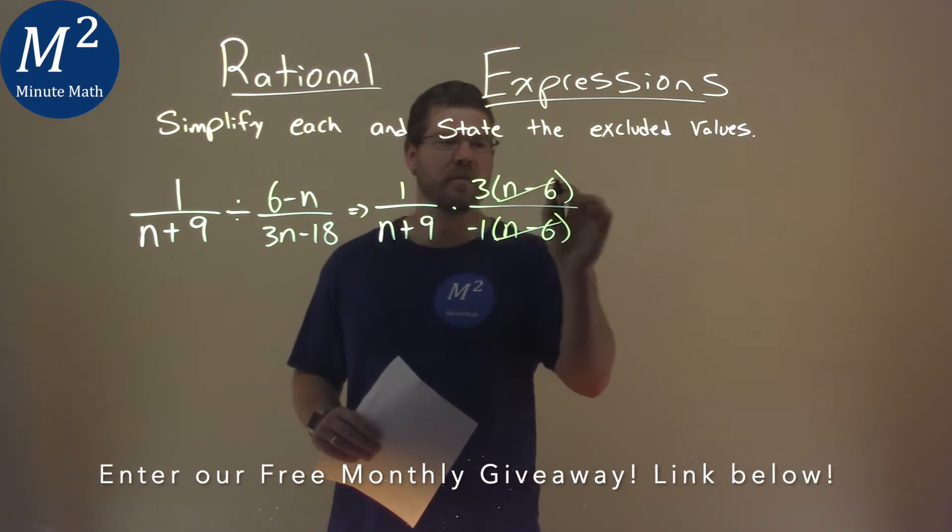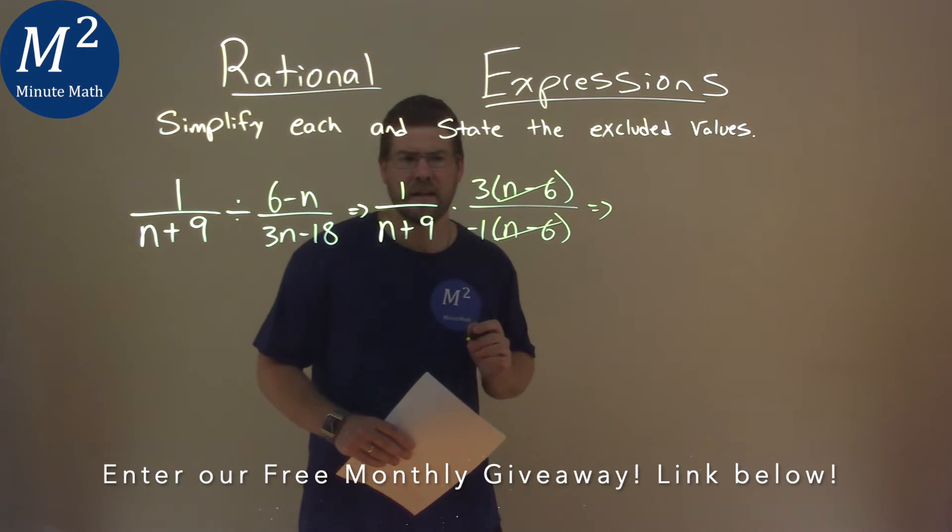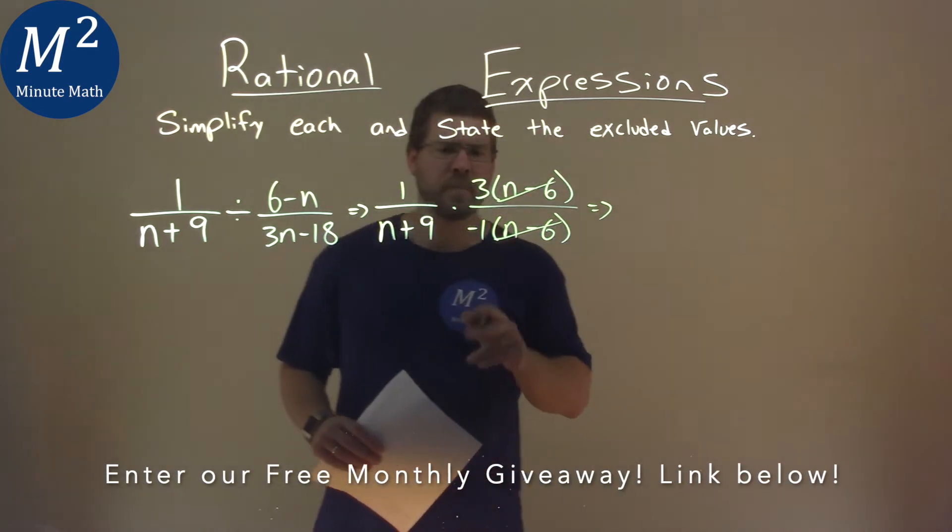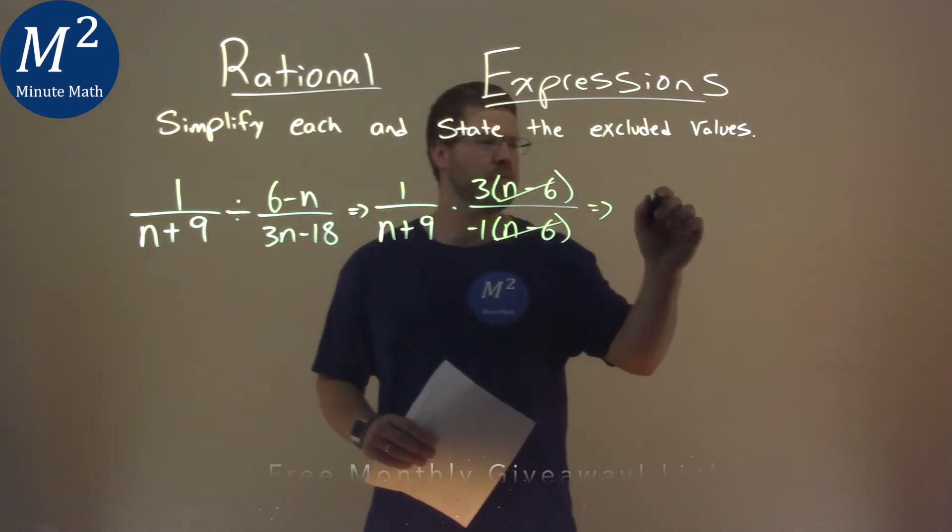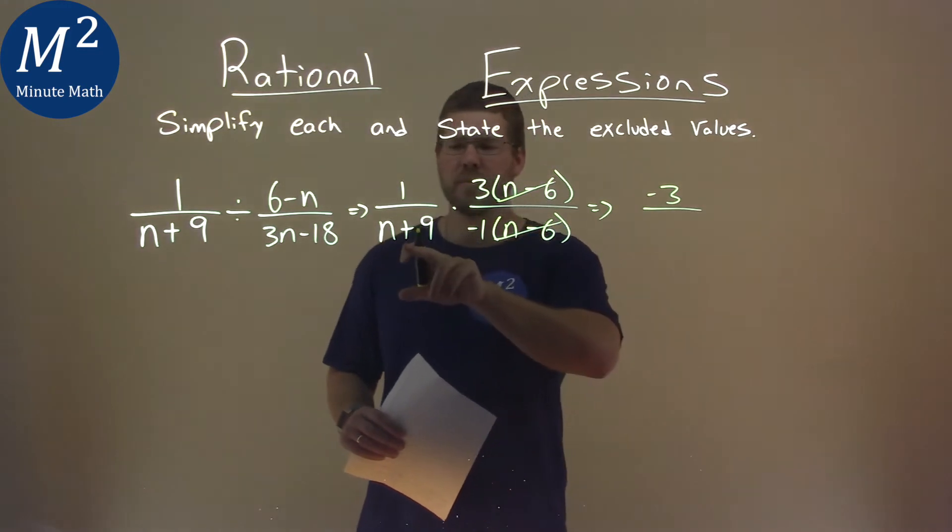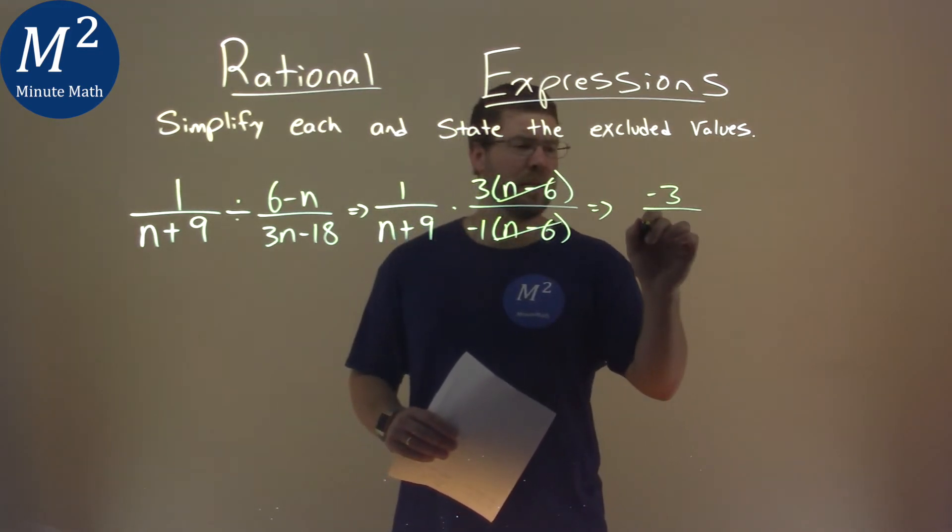n minus 6, n minus 6 crosses off and I don't really see anything else that can cross off. Well, let's bring the negative to the numerator. So we have negative 3 here over what's left is just the n plus 9.